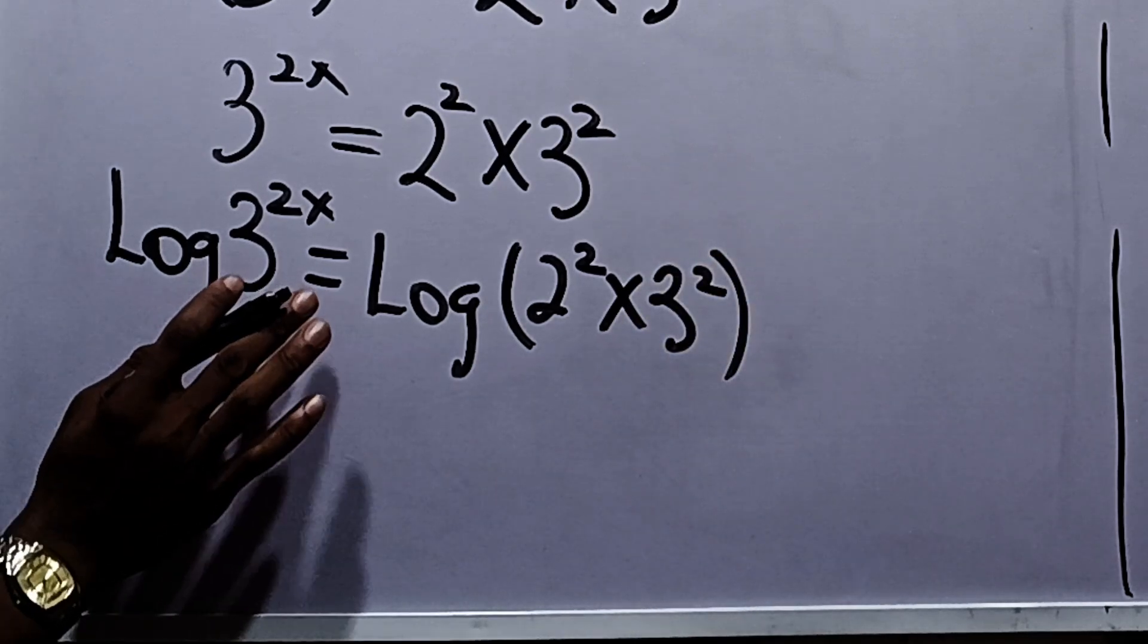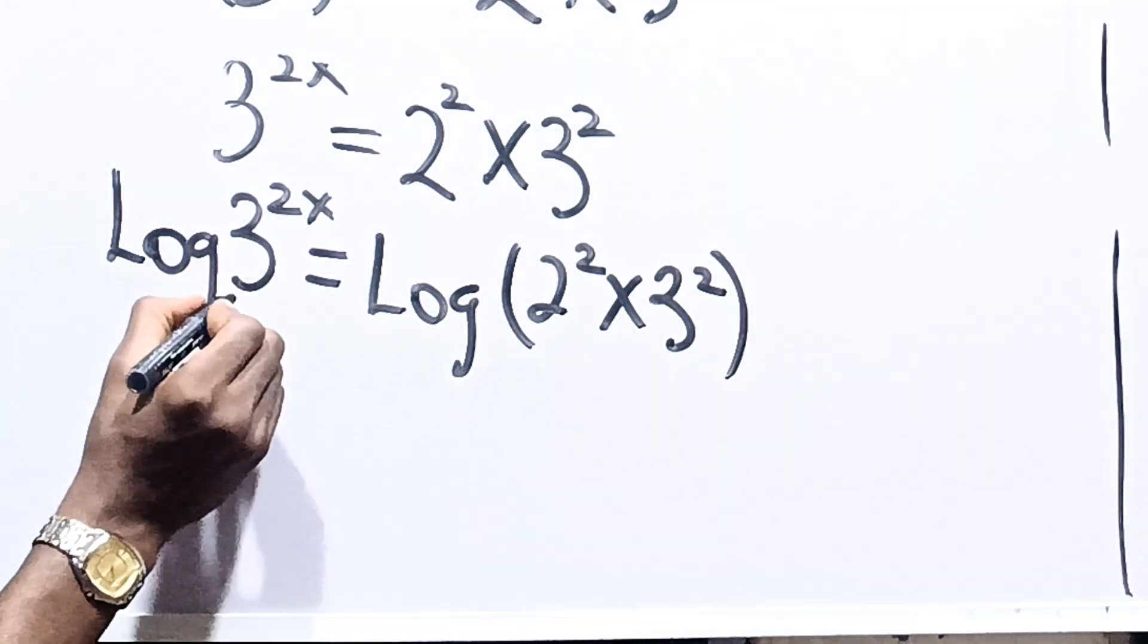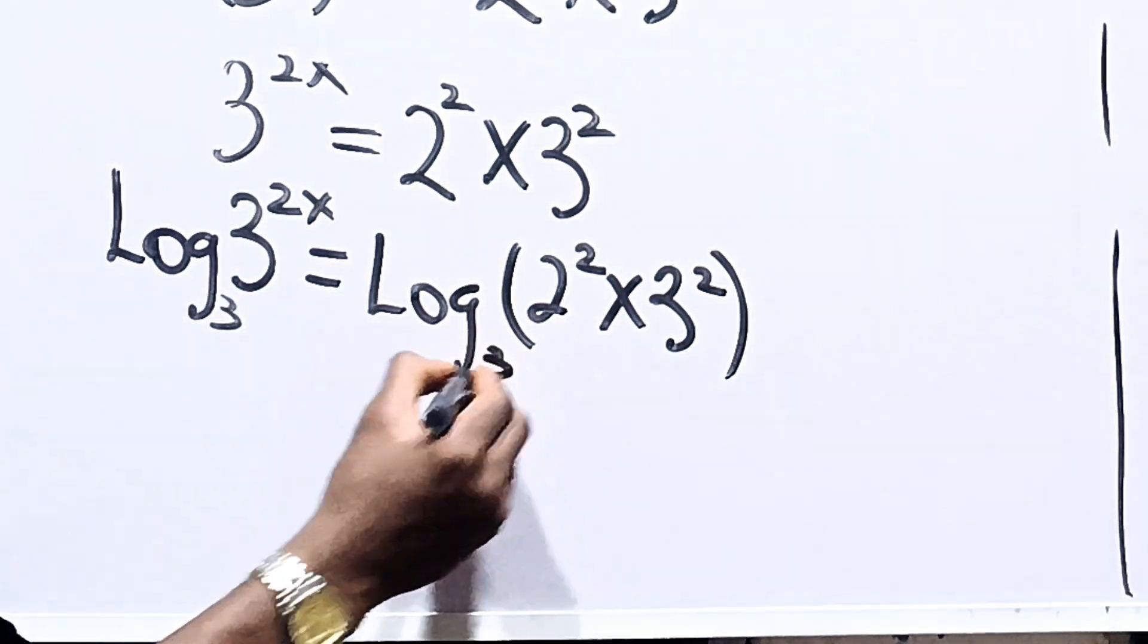Now when you have something like this, you should take the logarithm in the base of the variable. The variable is 3, so let's take the logarithm in base 3.